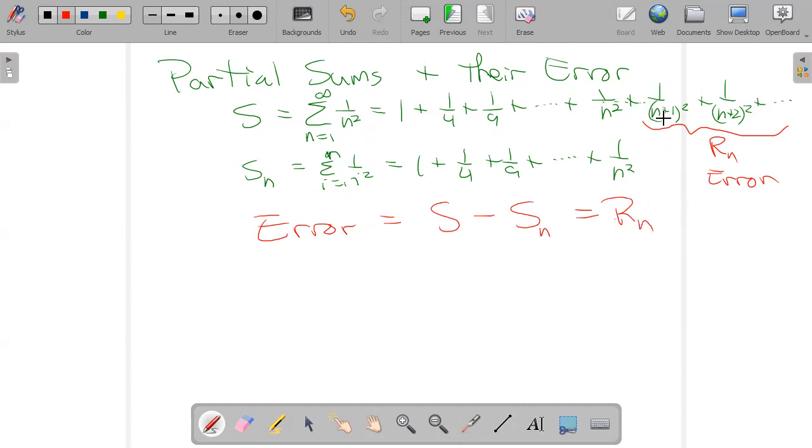is always the actual sum minus the partial sum. And we also call that the Nth remainder. And the Nth remainder always starts off with N plus one. So R sub N is always equal to the sum as, let's say, I equals N plus one to infinity of whatever we're adding up. In this case,